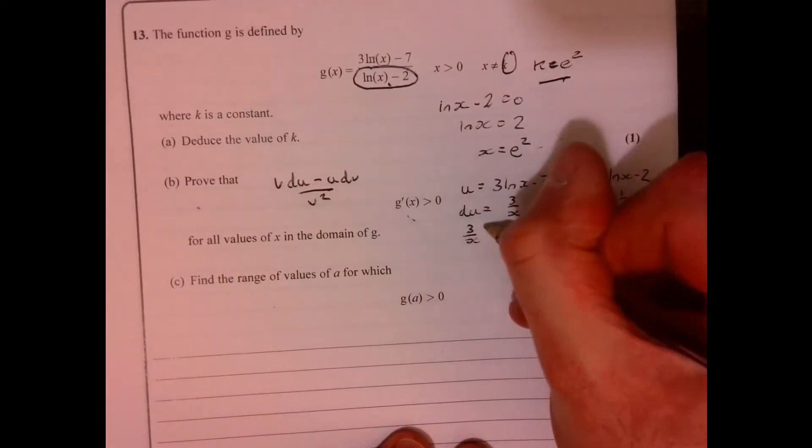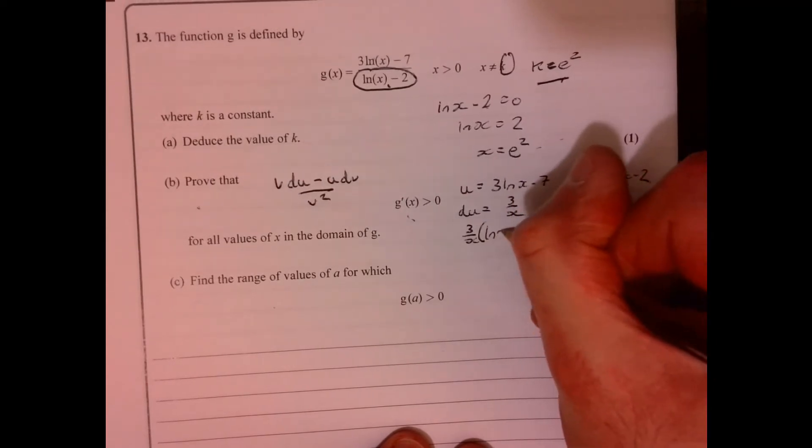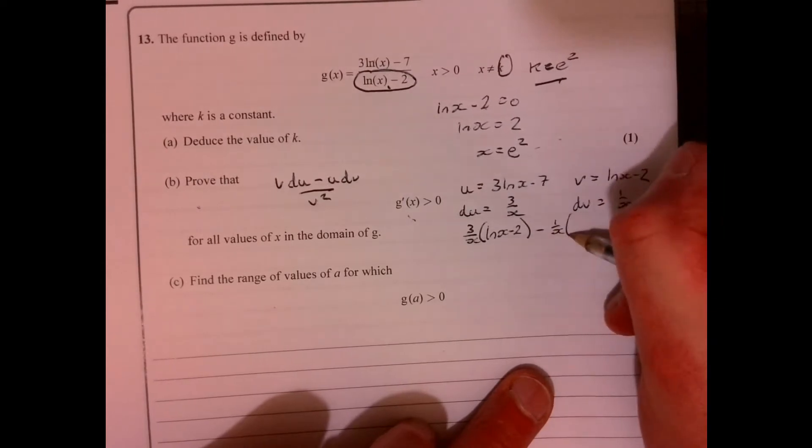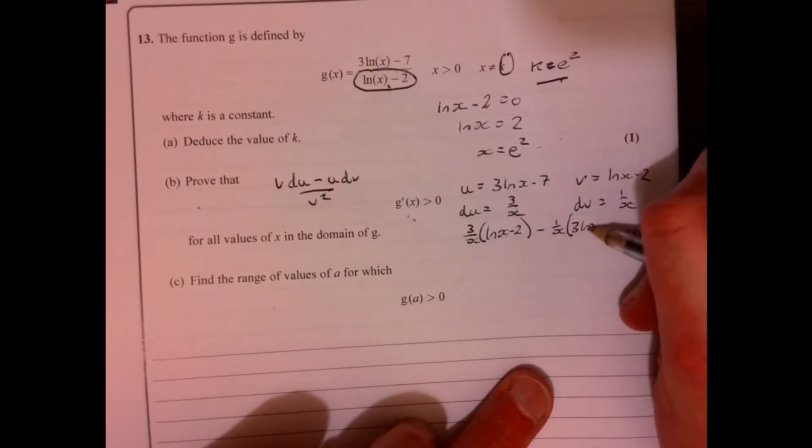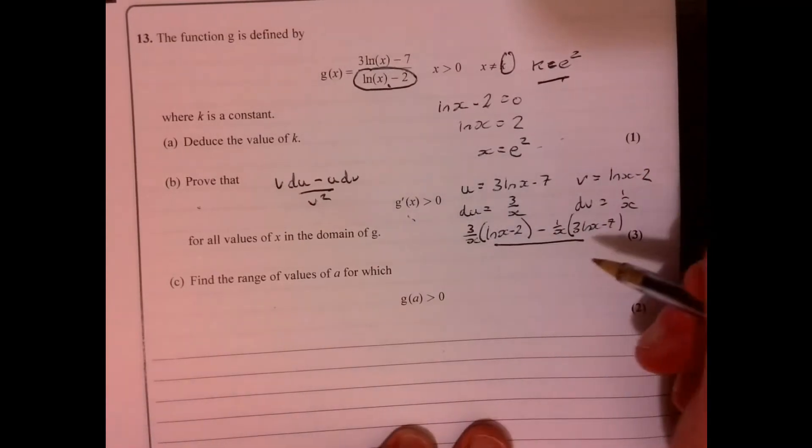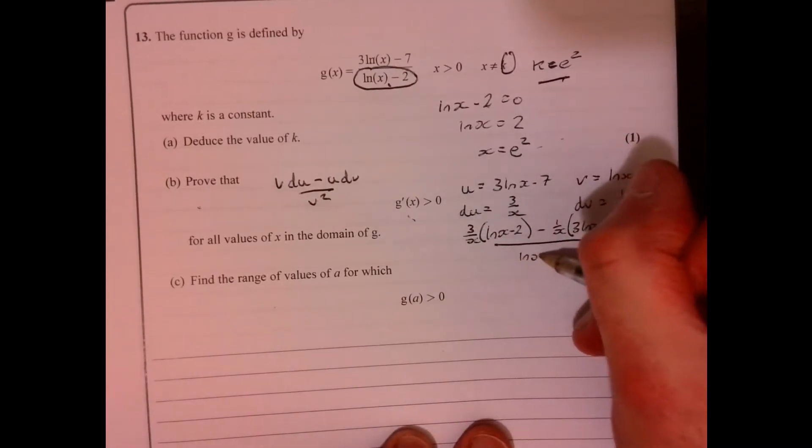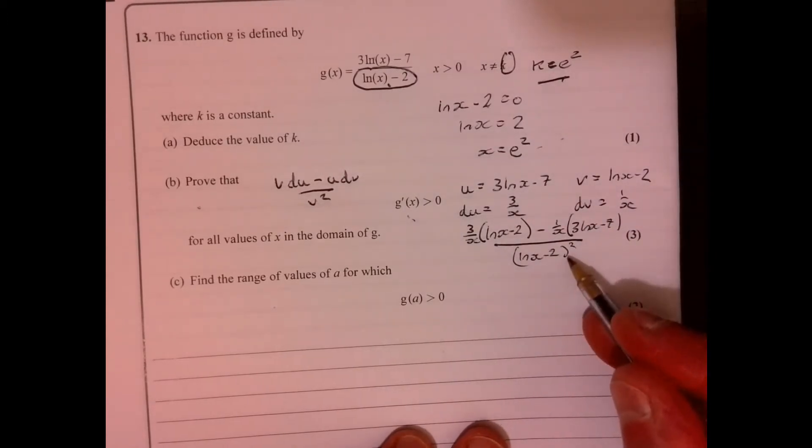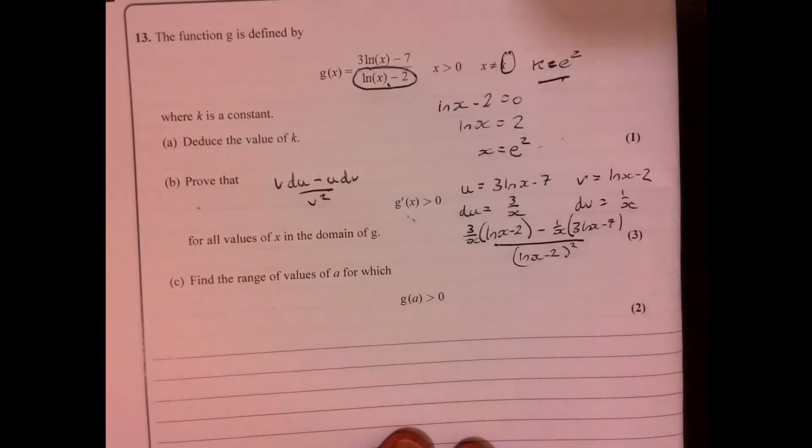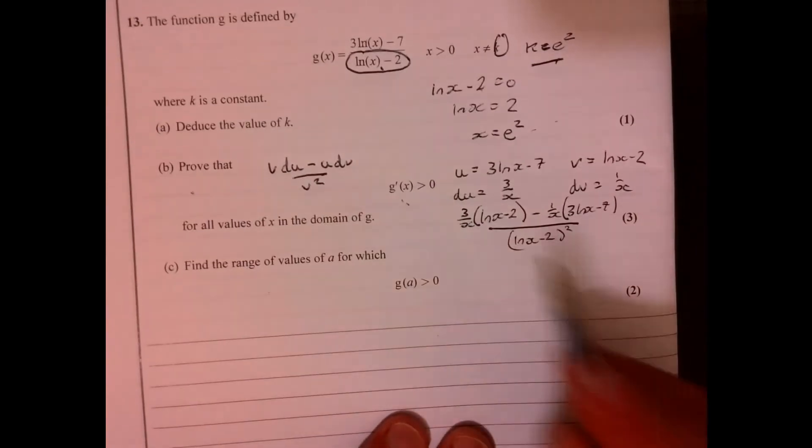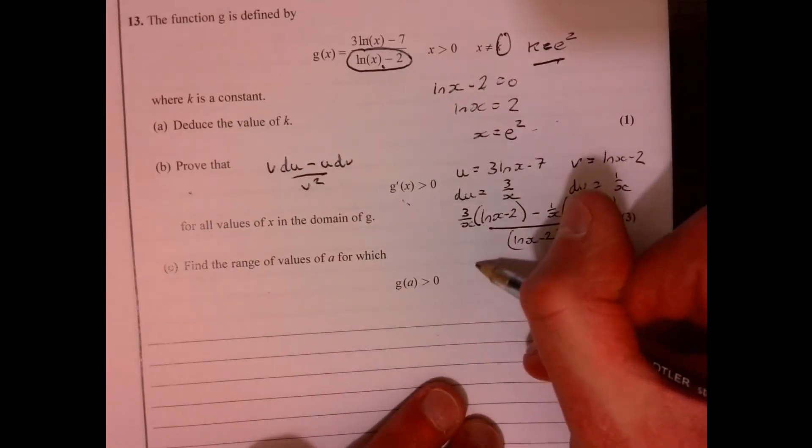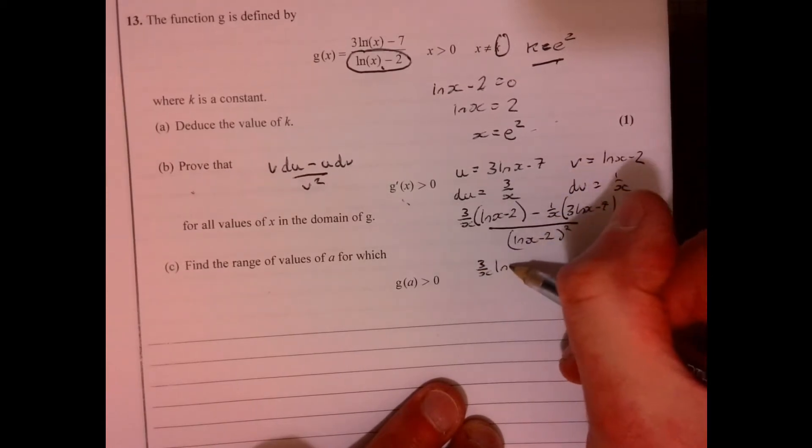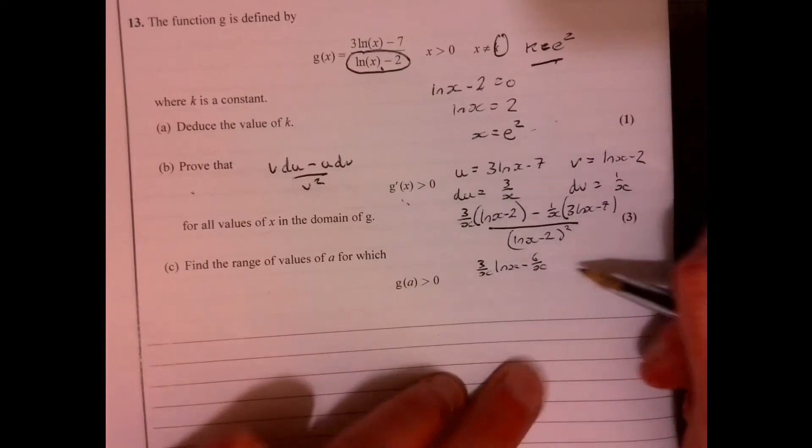So that's going to give us 3 over x times ln x minus 2, take away 1 over x times 3 ln x minus 7. And it's all over ln x minus 2 squared. Let's have a look and see what happens on the numerator. It's going to give us 3 over x ln x minus 6 over x.